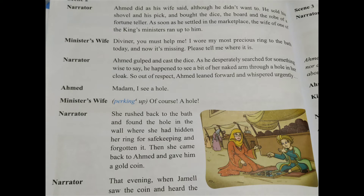Ahmed told her he saw a hole, and the minister's wife shouted. She rushed back to the bath and found the hole in the wall where she had hidden her ring for safekeeping and forgotten it. She came back to Ahmed and gave him a gold coin. As soon as the fortune teller whispered 'a hole,' she imagined she had kept the ring in a hole in the bathroom. She went, collected the ring, and came back to give the fortune teller a gold coin.